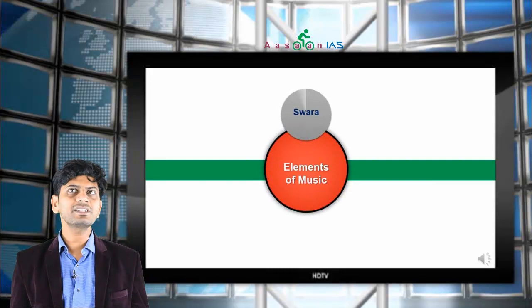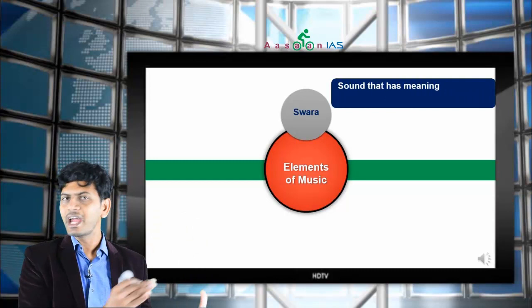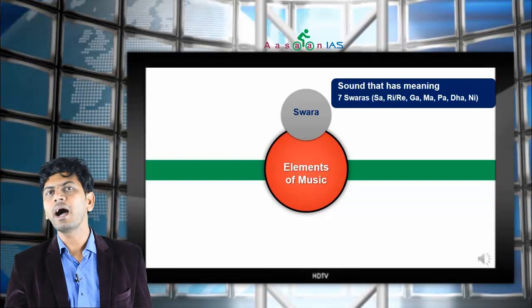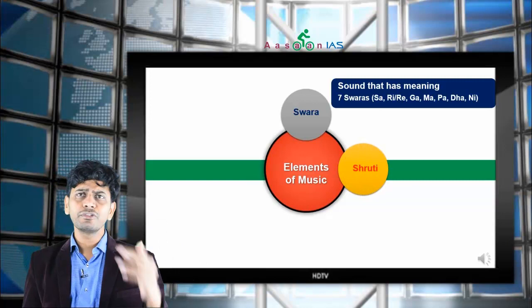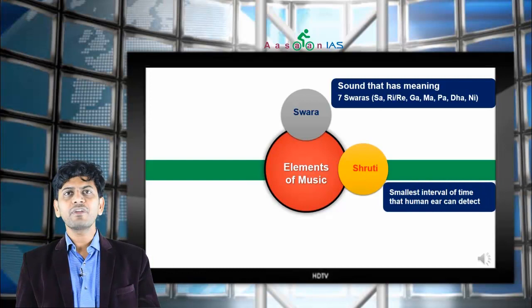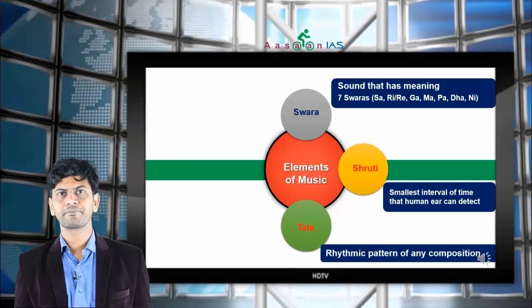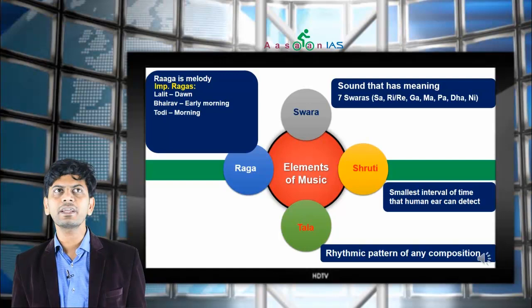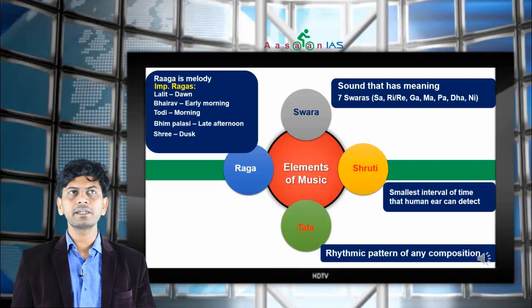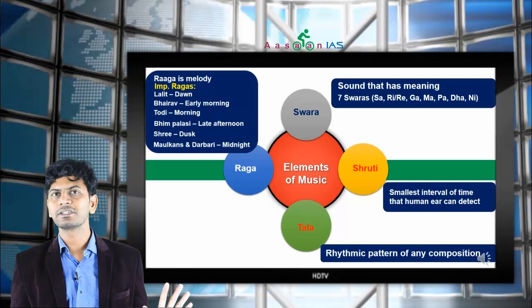Let me summarize what we have seen. Elements of music: First, Swar — basic sound that has meaning. Six basics, then Sa is added, total seven: Sa Ri/Re Ga Ma Pa Da/Dha Ni. When Sa repeats — Sa Re Ga Ma Pa Da Ni Sa — it is called octave. Then Shruti — smallest interval of pitch that the human ear can detect. Then Tal — rhythmic pattern of any composition. Then Raga — means melody. Important ragas: Lalitrag at dawn, Bairav raga early morning, Todi morning, Bimpalasi late afternoon, Shri raga dusk, Malkans and Darbari midnight. These are the various elements of music.